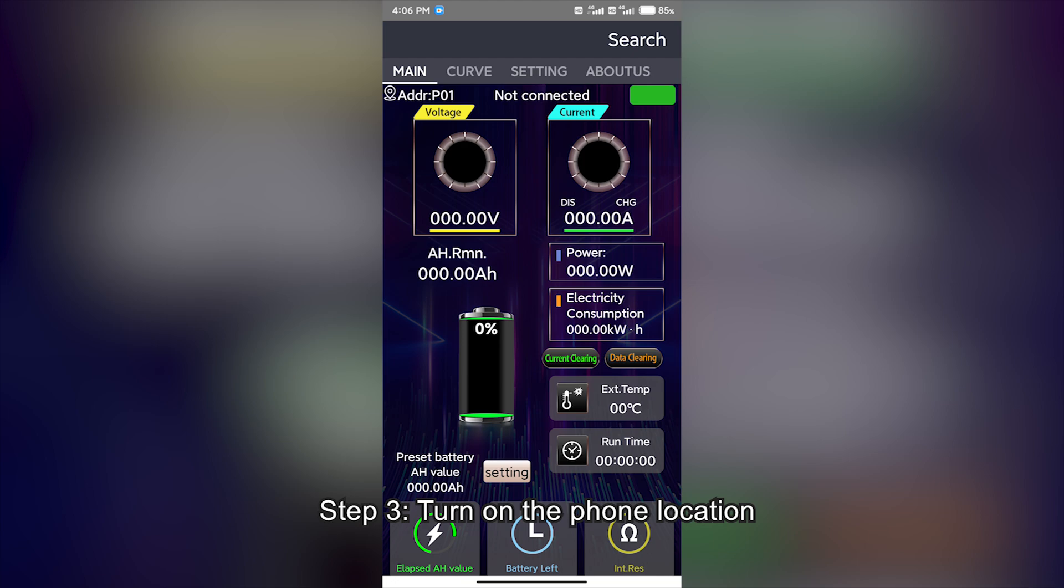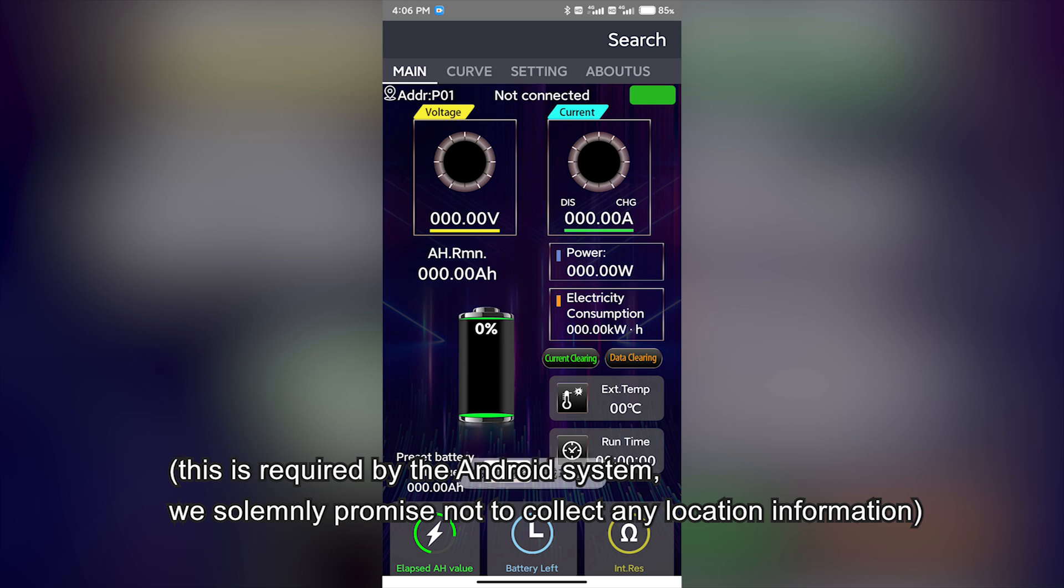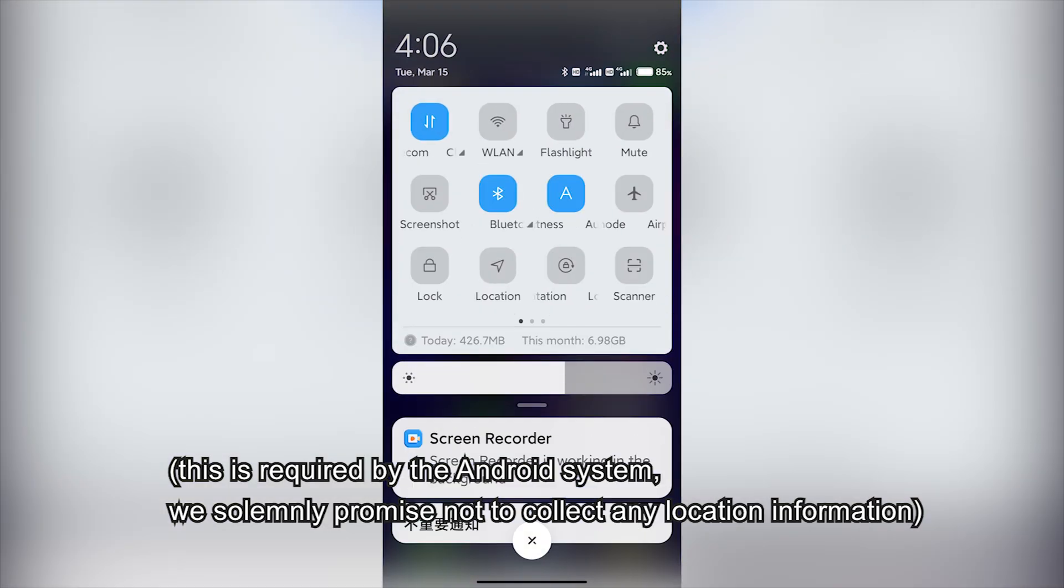Step 3. Turn on the phone location. This is required by the Android system. We solemnly promise not to collect any location information.